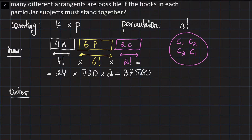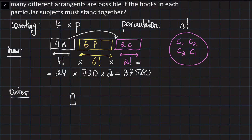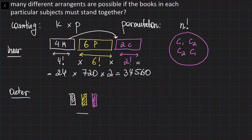Now we need to look at this from the outer perspective — basically moving the blocks themselves. For example, putting the math books after the physics books, or the physics books after the chemistry books. You have a white block of math books, a yellow block of physics books, and a pink block of chemistry books — three blocks in total. We need to use the permutation rule: if you have three different items, the number of rearrangements is equal to 3 factorial.